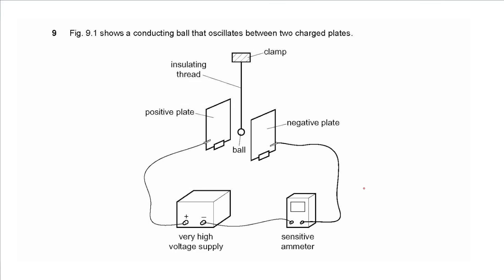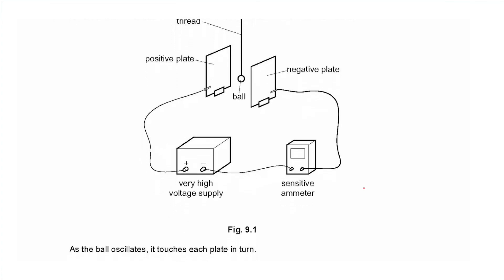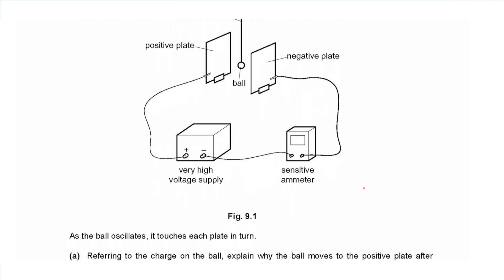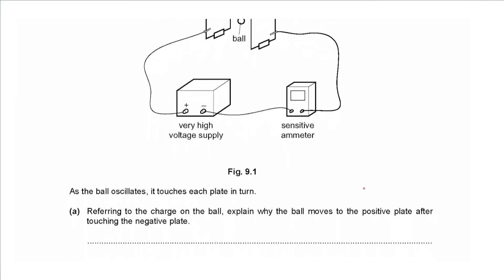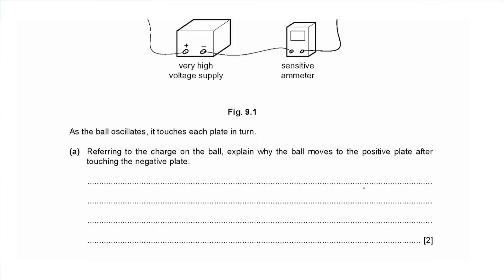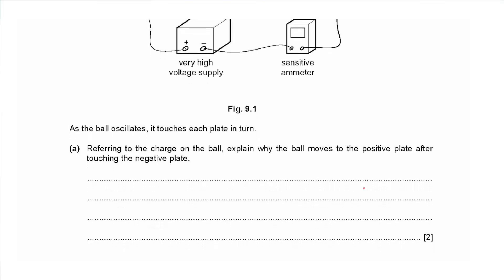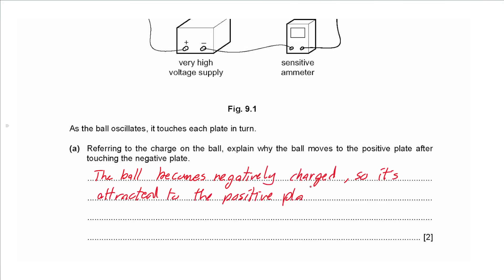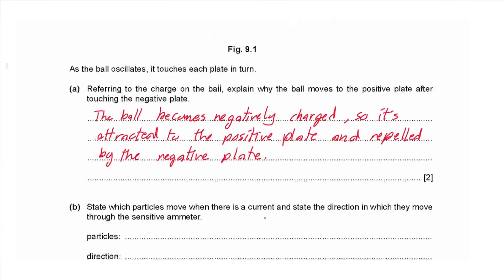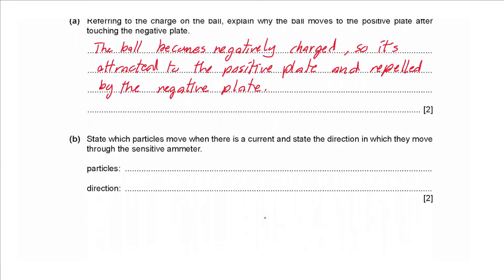Question 9: figure 9.1 shows a conducting ball oscillating between two charged plates connected to a power supply, with an ammeter in circuit. Explain why the ball moves to the positive plate after touching the negative plate. The ball becomes negatively charged; it is attracted to the positive plate and repelled by the negative plate — opposite charges attract and like charges repel.